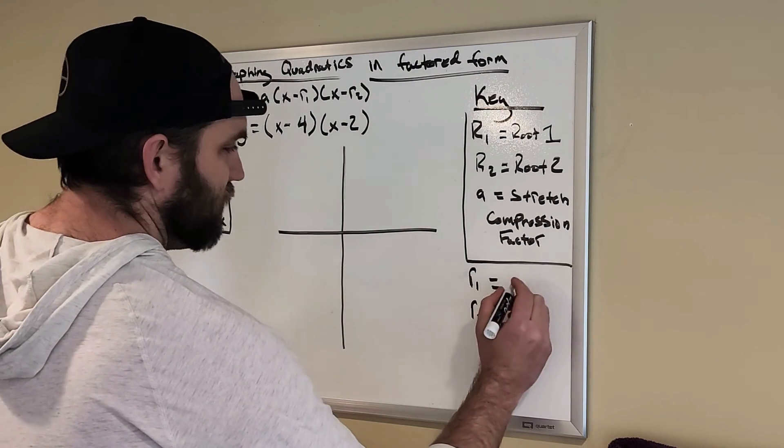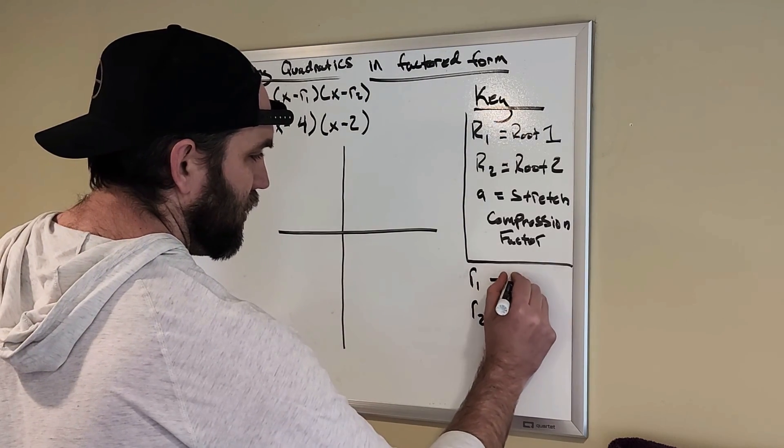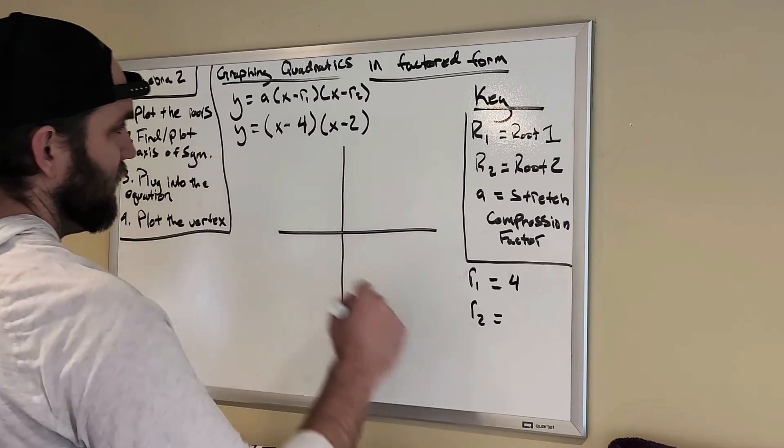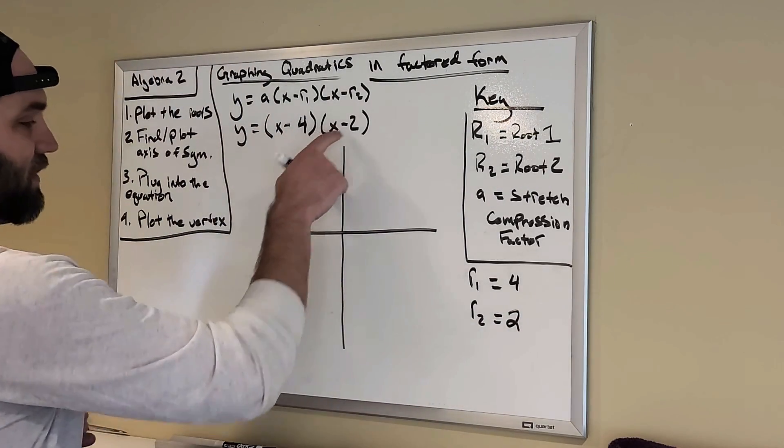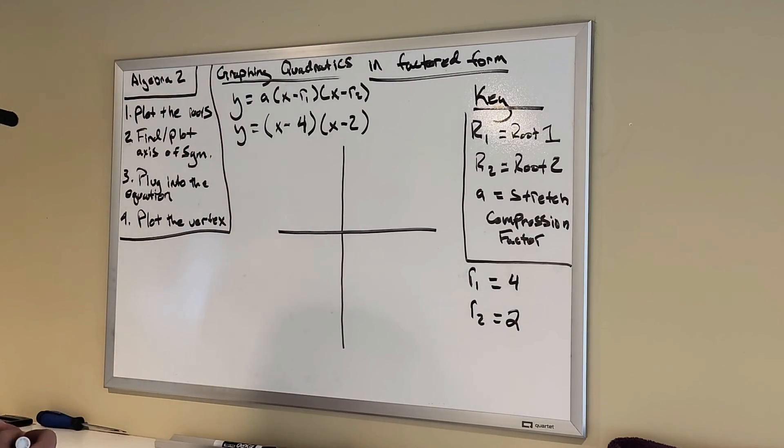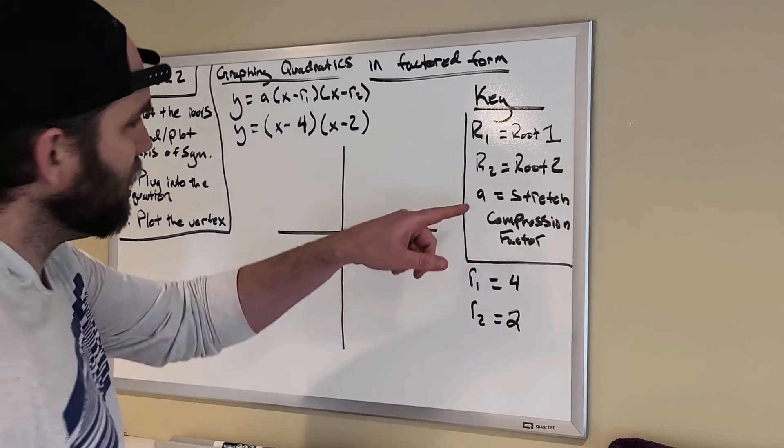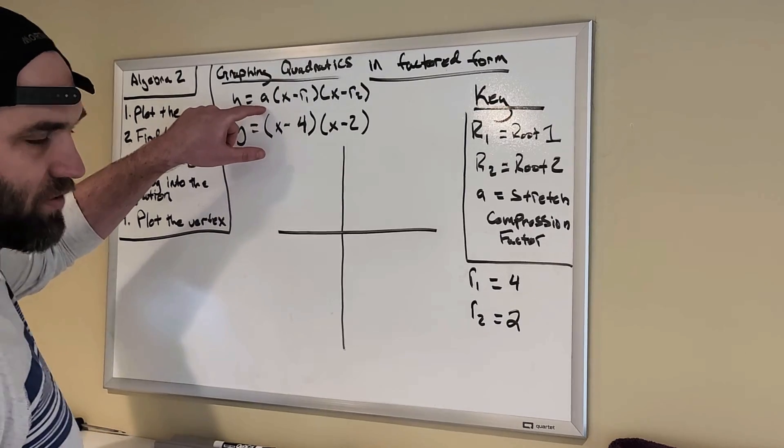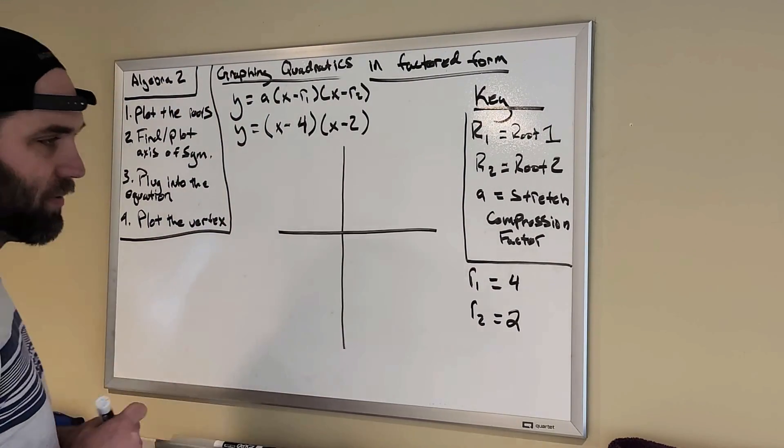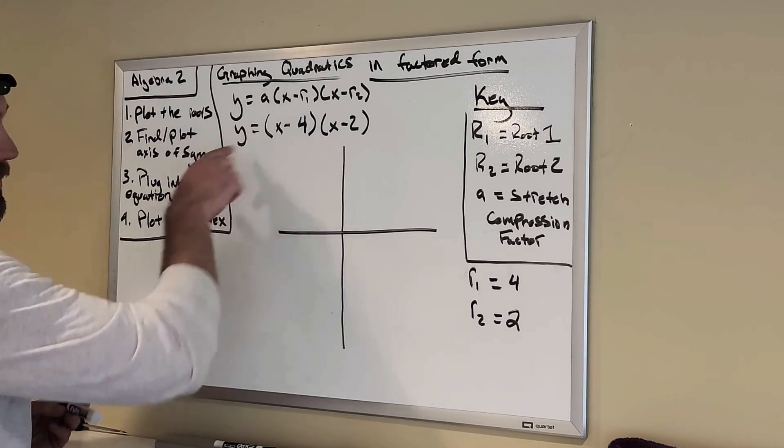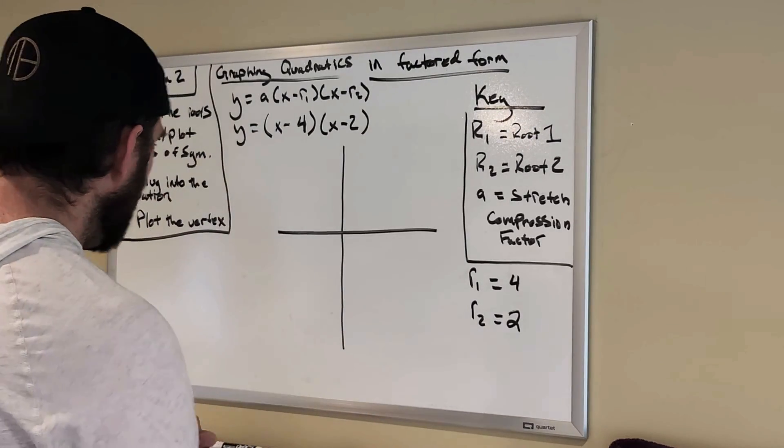So, root 1 is just going to be 4. Root 2 is going to be 2, okay? Because with negative 4 and negative 2, it ends up being positive 4 and positive 2. And then again, my a here is my stretch compression factor. I don't really need to worry about that for this problem, because there's not a number outside the parentheses.